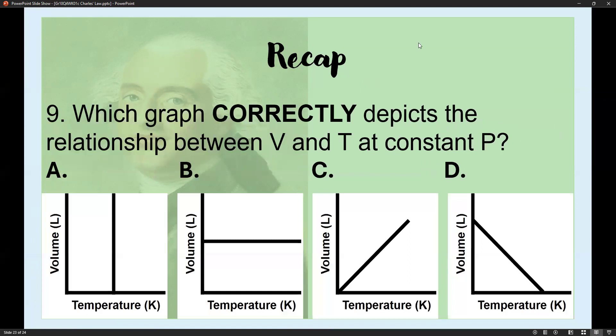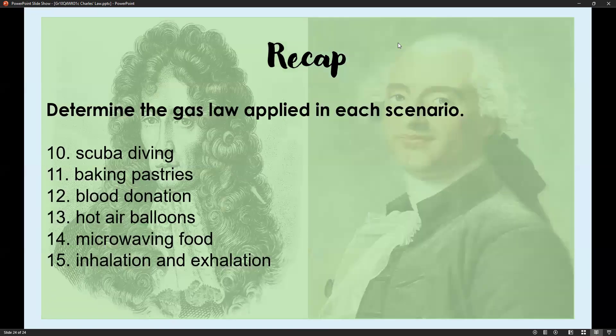Number nine: Which graph correctly depicts the relationship between volume and temperature at constant pressure? The correct answer is letter C. Why? Because if you start at the bottom of the graph, temperature is low and volume is low. Once you reach the top of the line, temperature is high and volume is high. It shows the direct proportional relationship.